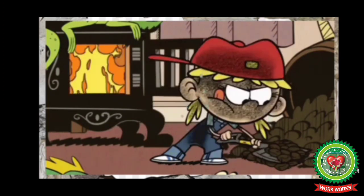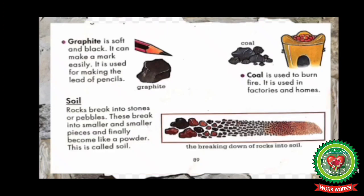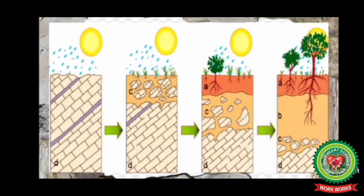Earlier, trains ran on coal. The last one is soil. Rocks break into stones or pebbles, which break into smaller and smaller pieces and finally become like a powder — this is called soil. Look at the picture showing the breaking down of rocks into soil. Soil is formed due to the breaking down of rocks into smaller pieces through the action of sun, rain, and wind.